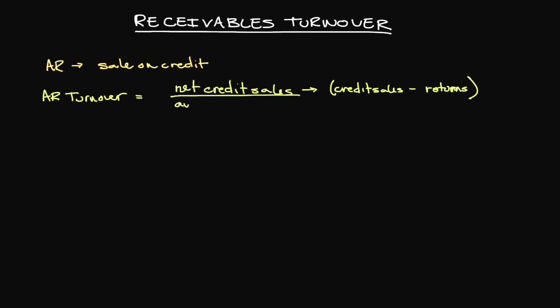How do we get the average accounts receivable? It's very similar to how we calculated average inventory in a prior video. We need beginning inventory, which I'll abbreviate as B inventory, for that period, and ending inventory, which I'll abbreviate as E.